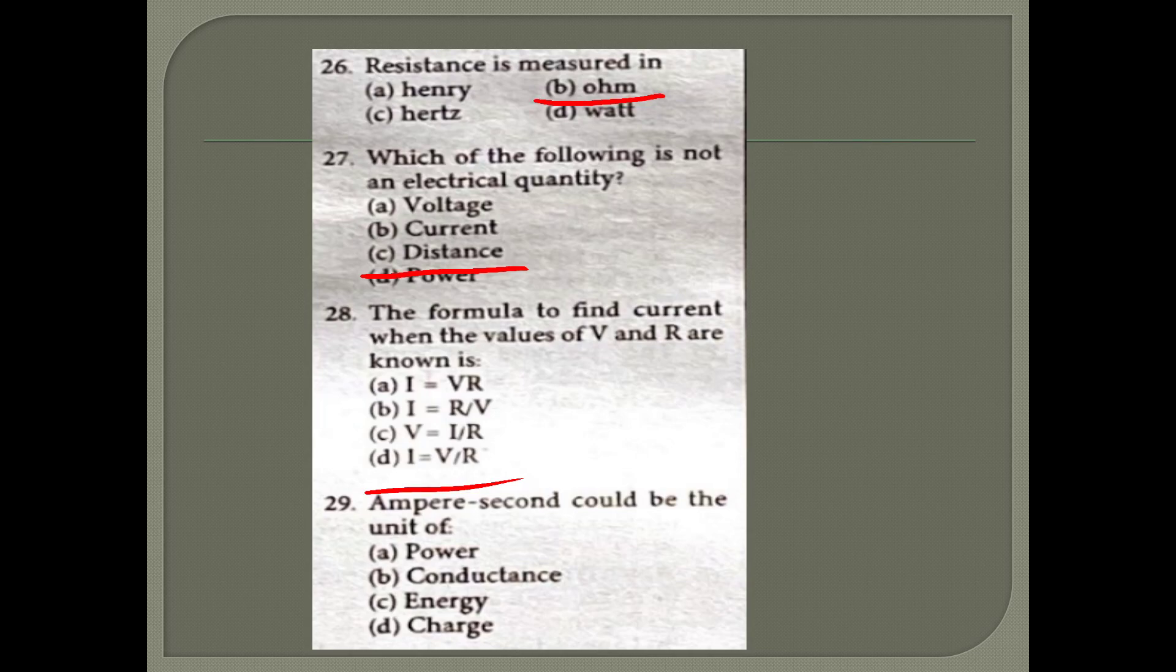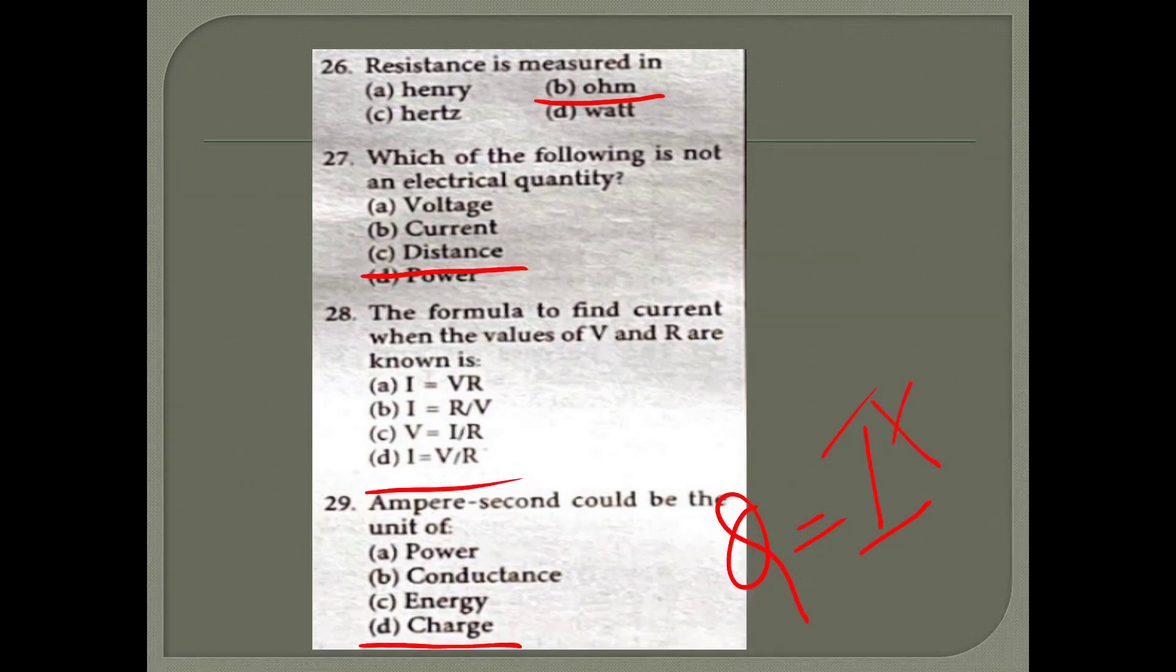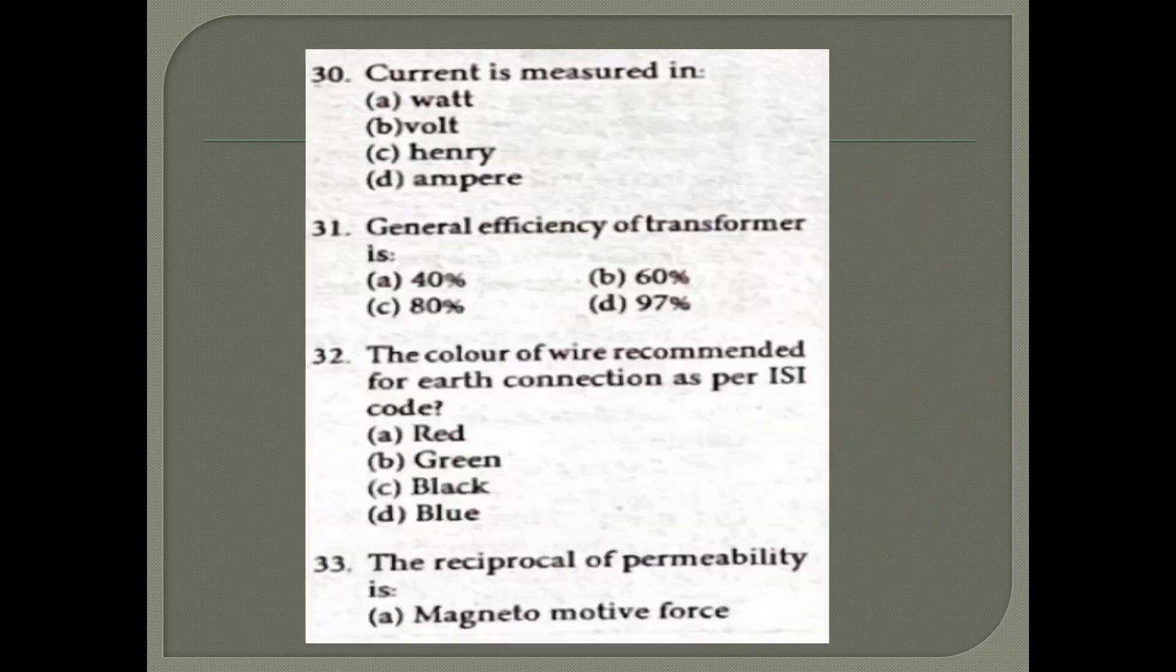31st question: Ampere second could be the unit of charge. Ampere second is the unit of charge, since Q equals I into T. Current unit is ampere, time unit is second, so ampere second. Current is measured in ampere.